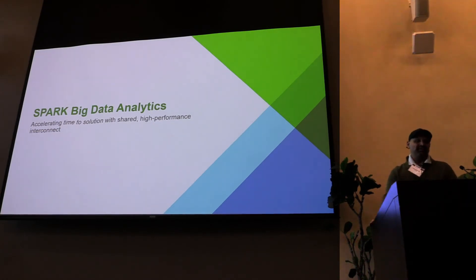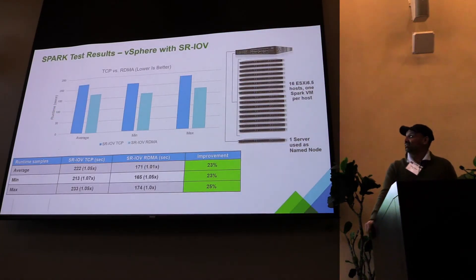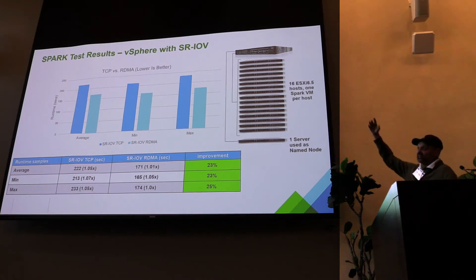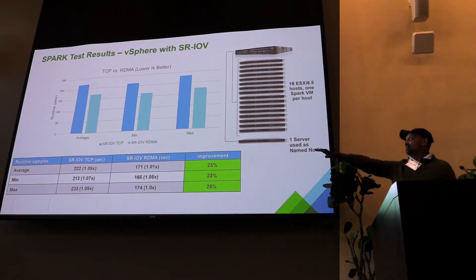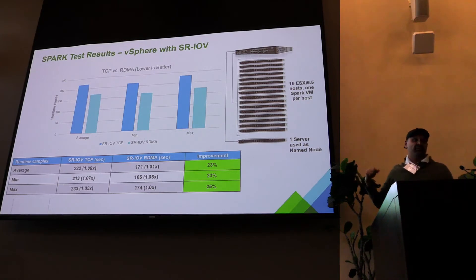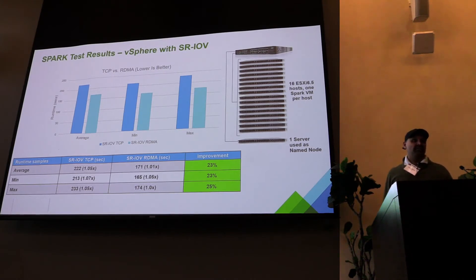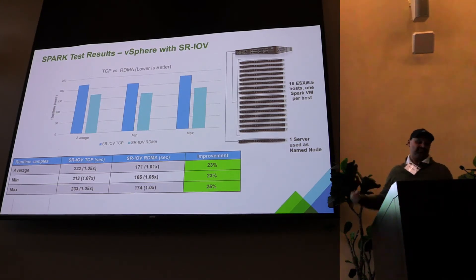Let's look at a few examples. We did an analysis of Spark — we ran typical Spark benchmarks on a 16-node cluster with one server as name node and InfiniBand connectivity between all nodes. We compared TCP/IP versus RDMA. You see a significant improvement in performance when you go RDMA. Not only that, RDMA is the closest thing to bare metal — we also ran it on bare metal and the difference is less than 2 to 3%. That's a very tolerable overhead, but at the same time you have all these things sharing these devices.